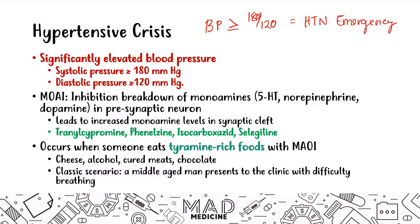The classic scenario is a middle-aged man who presents with difficulty breathing and a very rapid heart rate, and when you take their blood pressure, they're in hypertensive crisis. In the history, they'll tell you they were eating a cheeseburger, drinking alcohol, and then developed a hypertensive crisis with a headache.